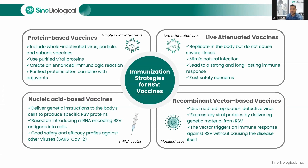Advances in understanding RSV's pathogenesis and immunopathology have led to new prevention approaches, including passive immunization with monoclonal antibodies, maternal vaccination, and active immunization using various vaccine types. Current vaccine candidates target RSV surface proteins, particularly the pre-fusion F protein, which induces potent neutralizing antibodies. Different vaccine categories include recombinant vector-based, nucleic acid, and protein-based vaccines. Live attenuated vaccines and chimeric live virus vaccines also show promise in generating potent immune responses.